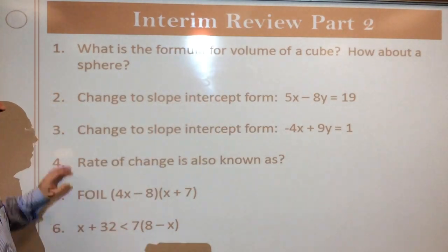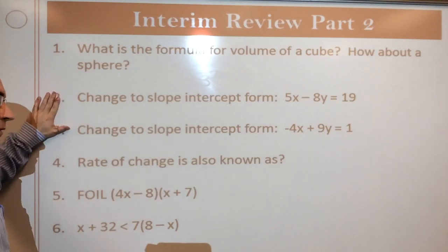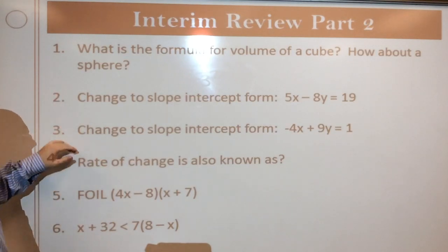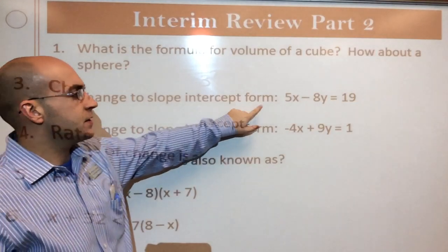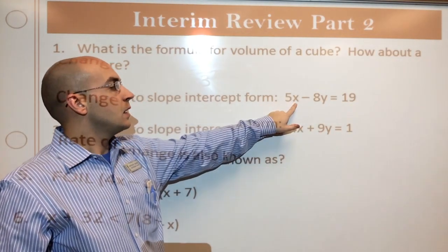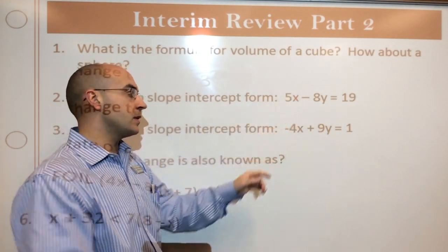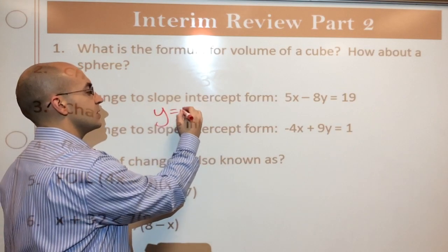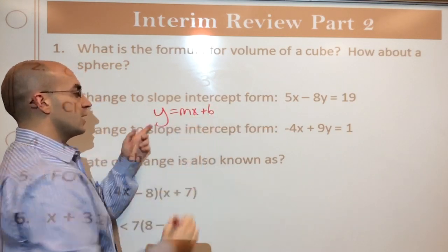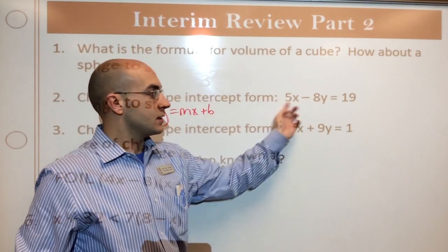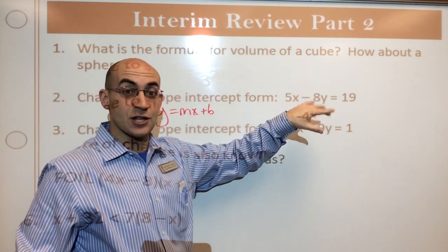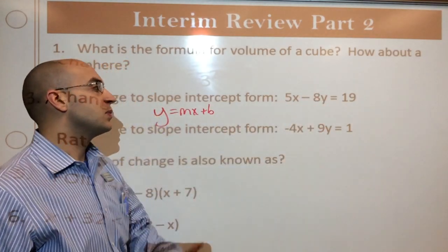Number two and number three, they're pretty much the same. So I'll only do one of them, but I'll give you the answer to the other one in a second. So we want to change this to slope-intercept form, right? That's standard form. So I've got to get slope-intercept form. And remember, slope-intercept form is y equals mx plus b. I'm trying to get y all by itself. And in this equation, clearly, y is kind of in the middle of a bunch of nonsense.